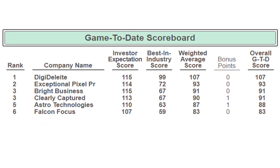Let's look at the game-to-date scoreboard. Company D is leading at 107, then E at 93, B at 91, C at 91, company A at 88, and company F at 83. Company C and A each got a bonus point. So again, don't panic. Stick with it, stay with your strategy and give it a few years — I'd say about year 10 or 11. By that time you will know if you're on the right track or if you really need to mix it up.